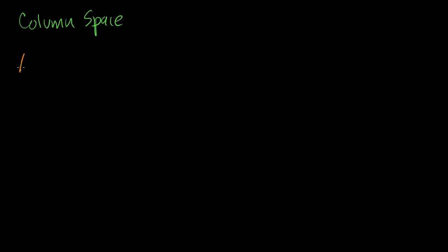We spent a good deal of time on the idea of a null space. What I'm going to do in this video is introduce you to a new type of space that can be defined around a matrix. It's called a column space. Let's say I have some matrix A — an m by n matrix. I can write my matrix A as a collection of column vectors.